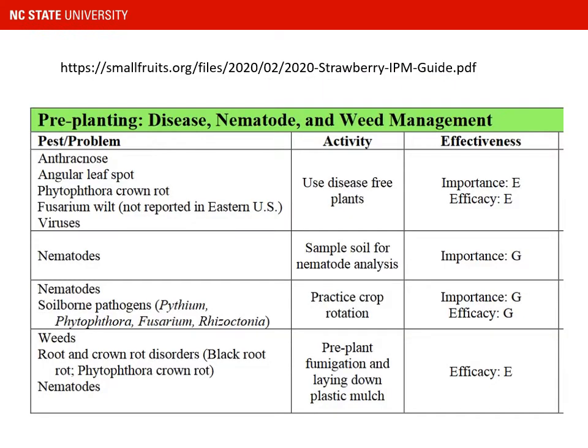One of the tables in this guide covers pre-plant disease, nematode, and weed management strategies. The pest problems most often introduced into the planting on the plants are diseases like the fungal pathogen anthracnose, angular leaf spot which is a bacterium, Phytophthora crown rot, Fusarium wilt, a new disease called Neopestalotiopsis, and viruses. The use of disease-free plants is really important, and that's your key first step in pre-plant actions for managing diseases.